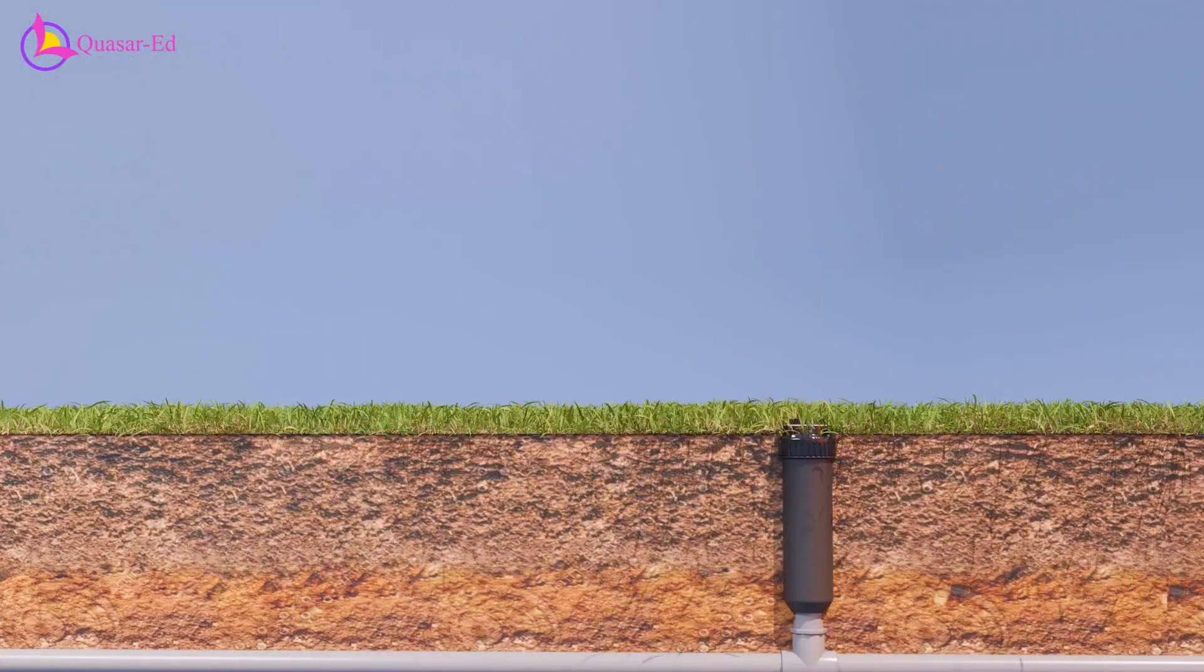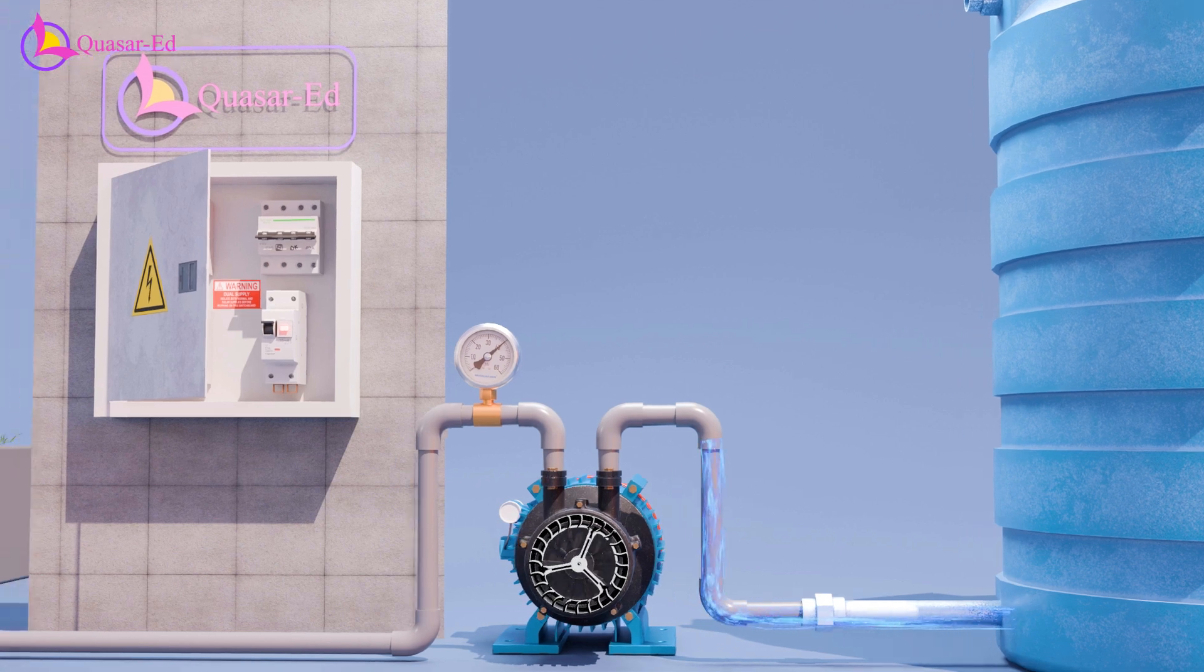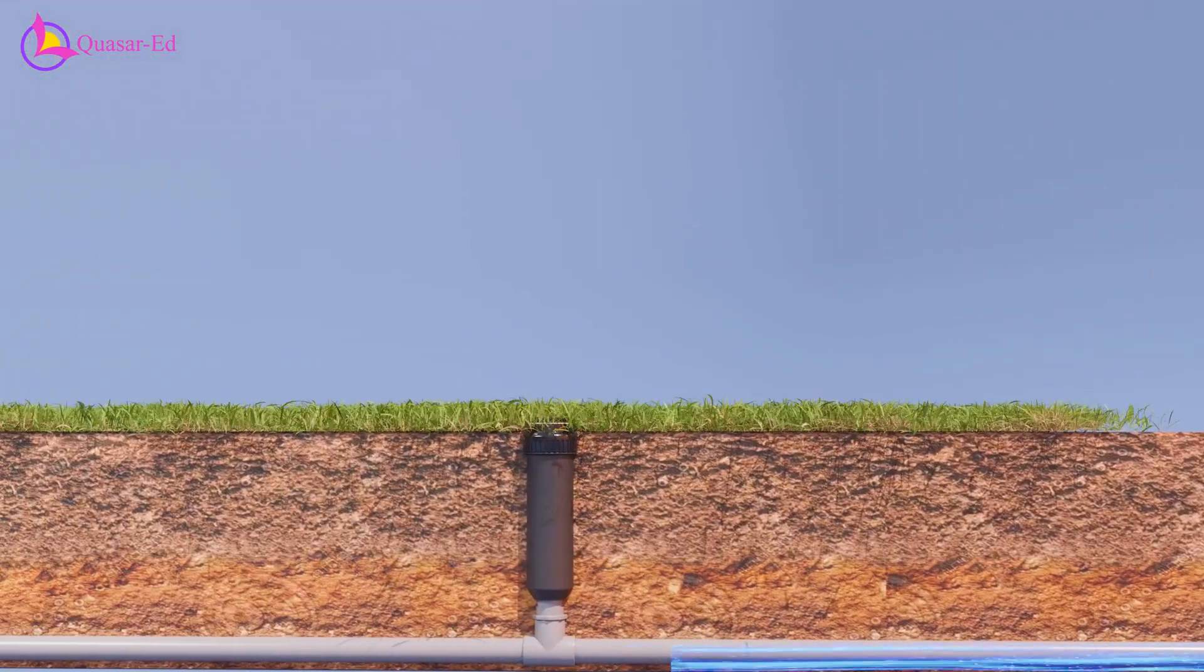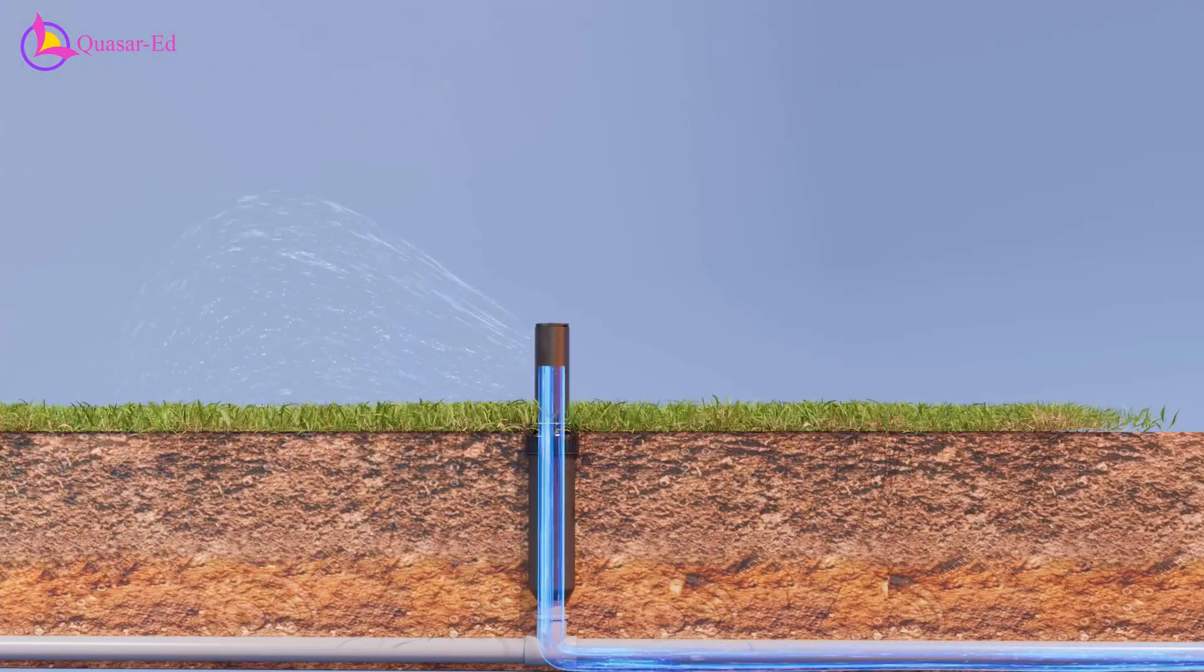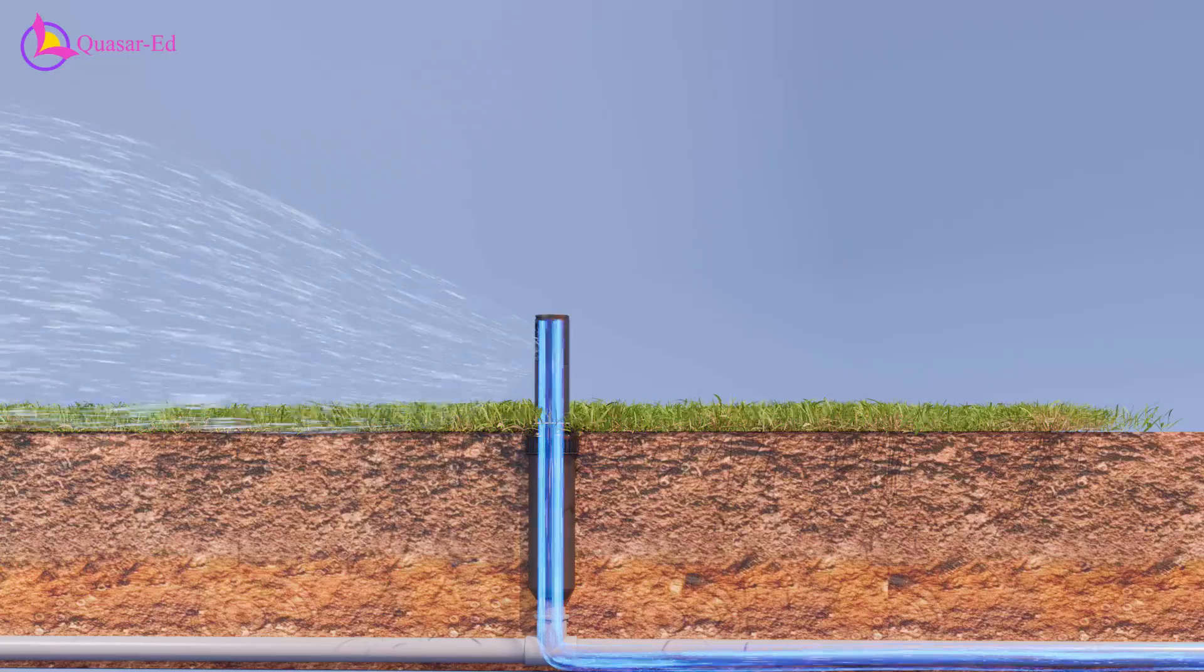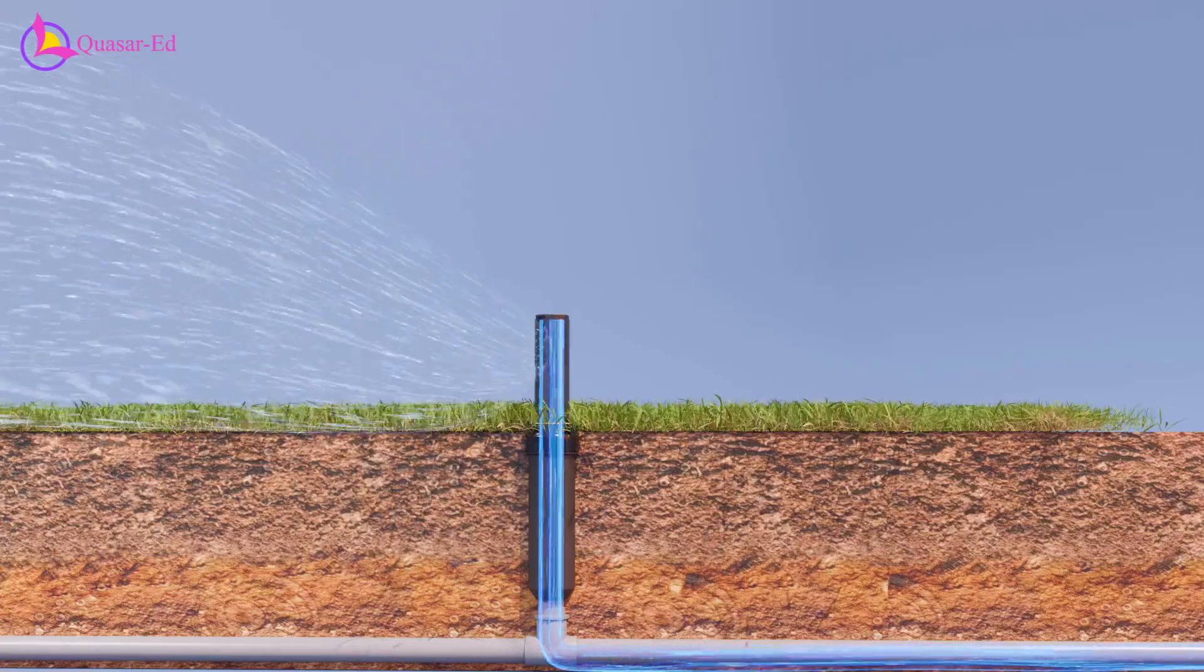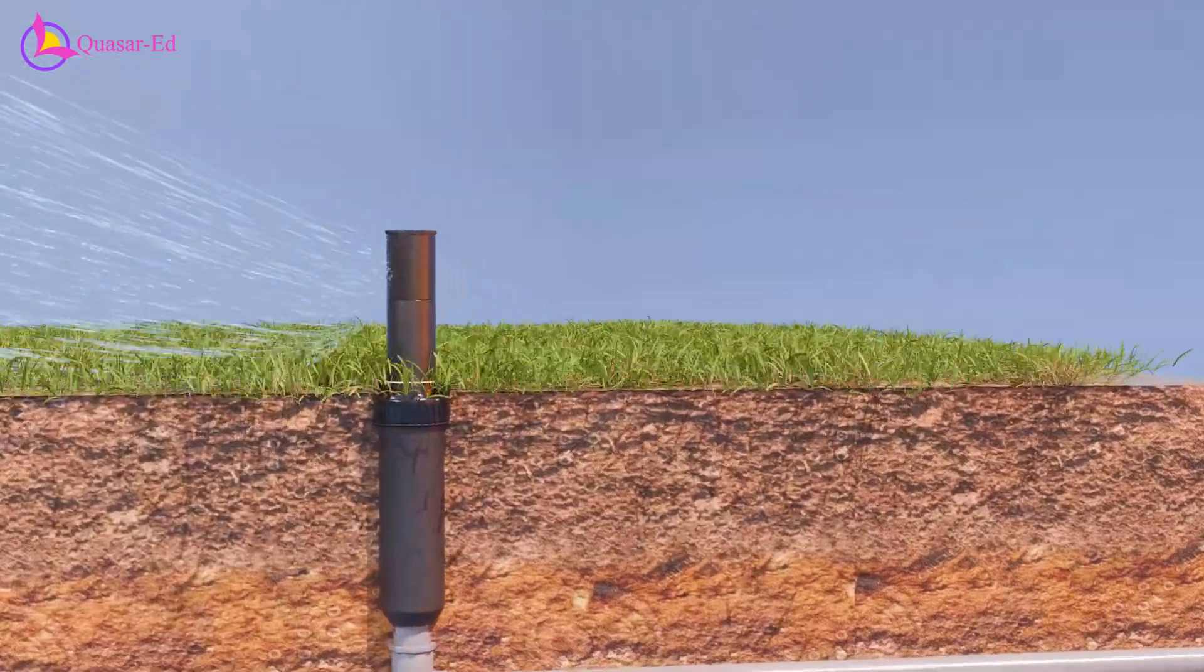When the watering starts, the water pressure pushes the inner stem, raising the watering nozzle above the ground to begin irrigation. But the truly fascinating part isn't just that it pops up—the inner stem actually rotates back and forth, distributing water evenly across your lawn.